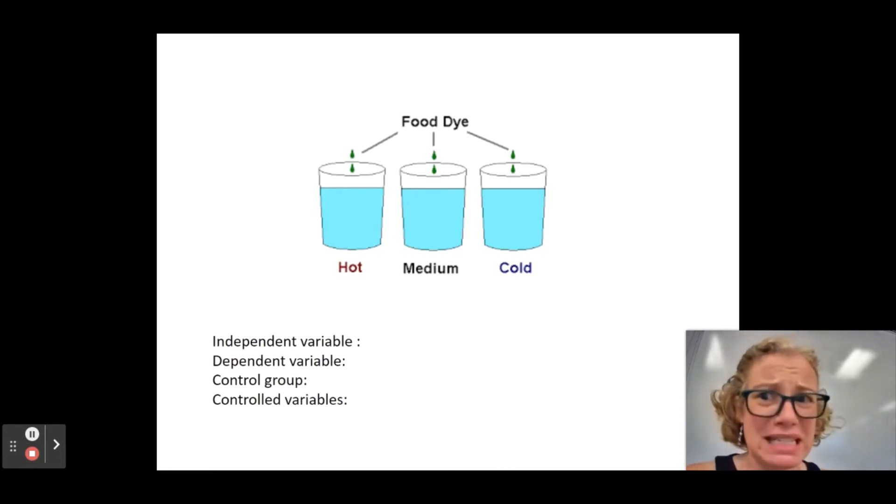Okay, what would be my dependent variable? What data would I expect to see? And this is hard for a lot of kids to come up with. You probably know water will spread out, that food coloring will spread out, right? And given enough time, all cups should be equally green.